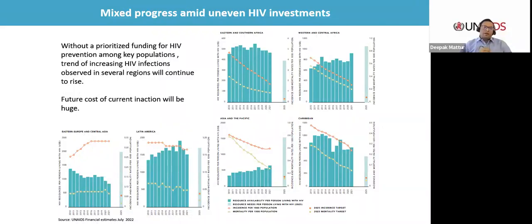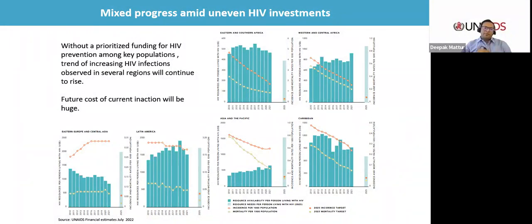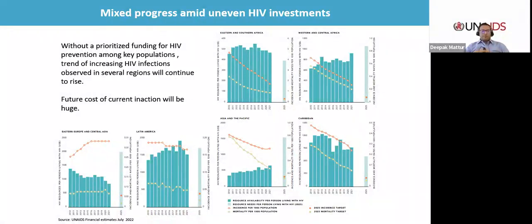There is mixed progress amid uneven investments. Comparing total resources available in 2021 against those required to meet 2025 targets, funding gaps vary across regions — from a 13% gap in Western Central Africa, to a 57% gap in Asia and the Pacific, to an 82% gap in the Middle East and North Africa. Without prioritized funding for HIV prevention among key populations, the trend of increasing HIV infections observed in several regions will continue. The future cost of inaction will be huge. This is not the time for cuts, but for increased global solidarity and domestic investments.